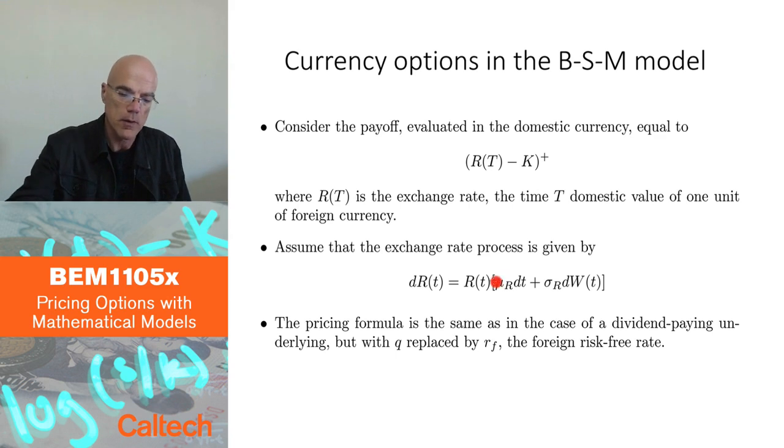Therefore it's given in terms of its dynamics as dR = R μ_R dt + σ_R dW(t). Now this is actually not the best model for exchange rates. Exchange rates are really different from stocks.